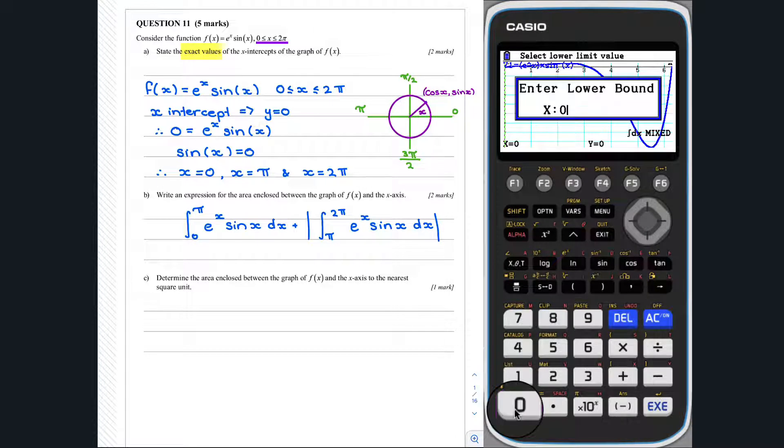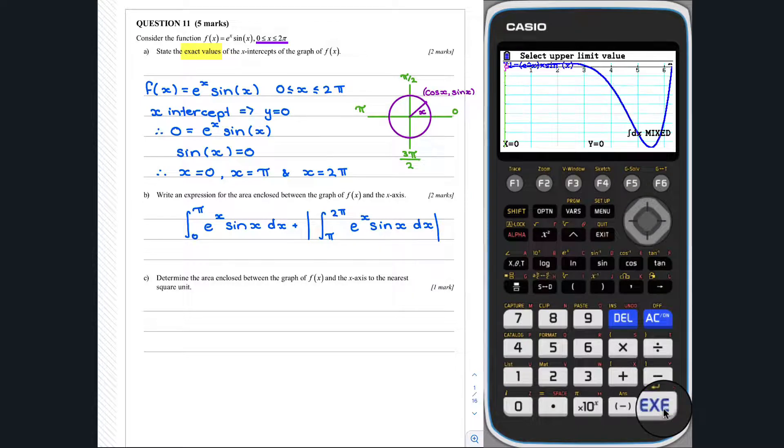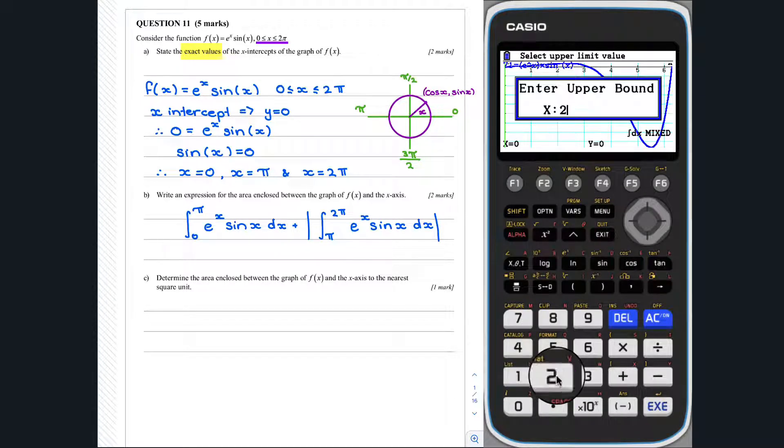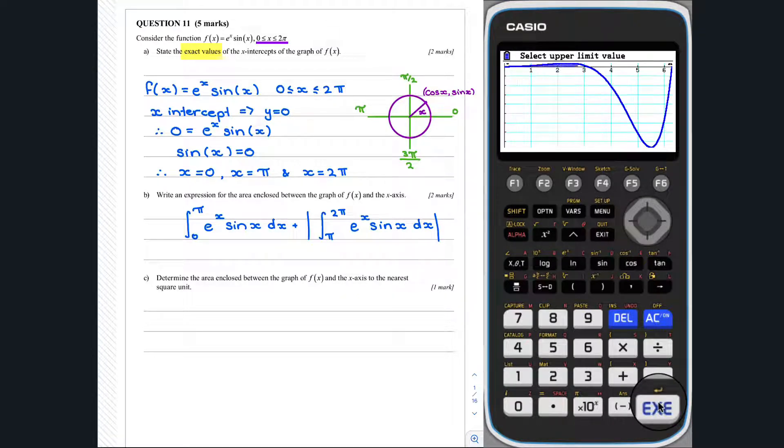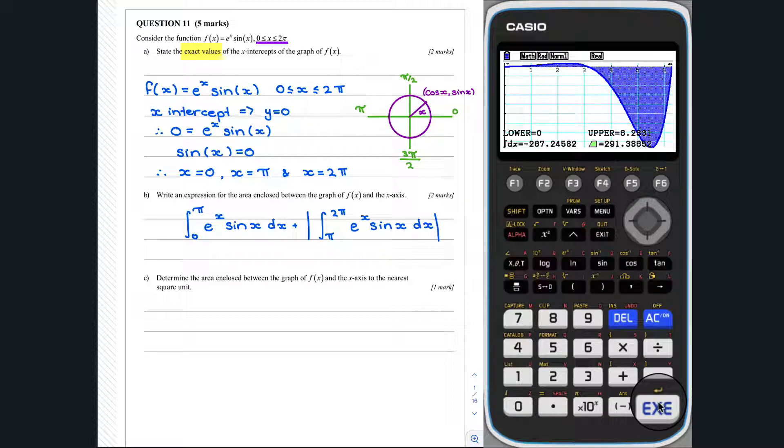Our lower bound is 0, and our upper bound is 2 pi. Thus, the area between the graph and the x-axis to the nearest square unit is 291 square units.